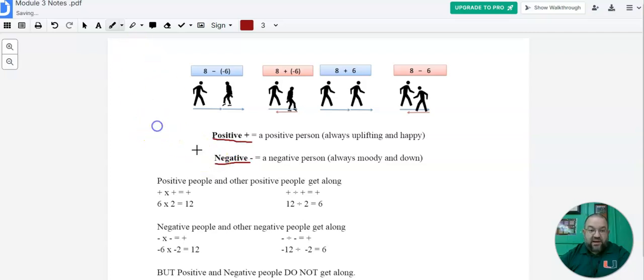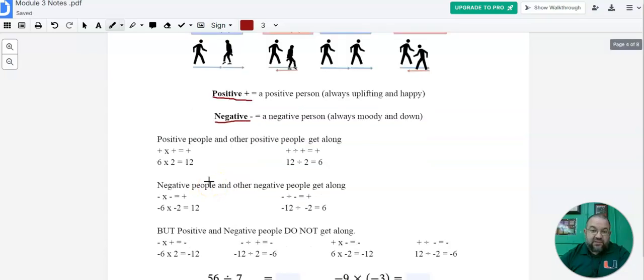So with that in mind, anytime that we have a positive times a positive number, we're always going to yield a positive number. You've been doing that since you've been doing multiplication tables at whatever grade level you started, third or fourth grade. We know this. Positive 6 times positive 2 is going to always be positive 12. So positive times a positive is always positive.